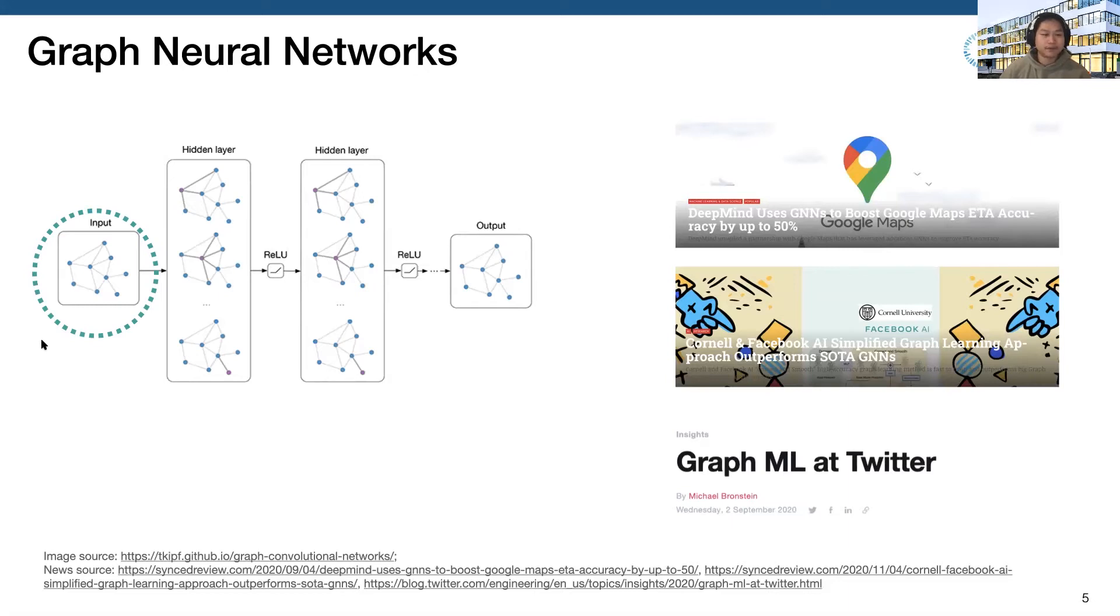Most of the previous work focuses on adversarial examples over GNN, where the attacker tries to manually create some examples to fool the GNN and let them predict the wrong label. Here, we take a different angle to understand the security and privacy risk in GNN. We are focusing on the graph data.